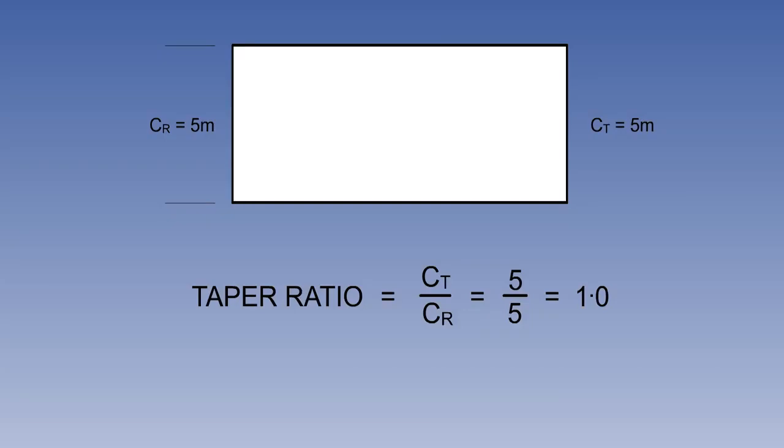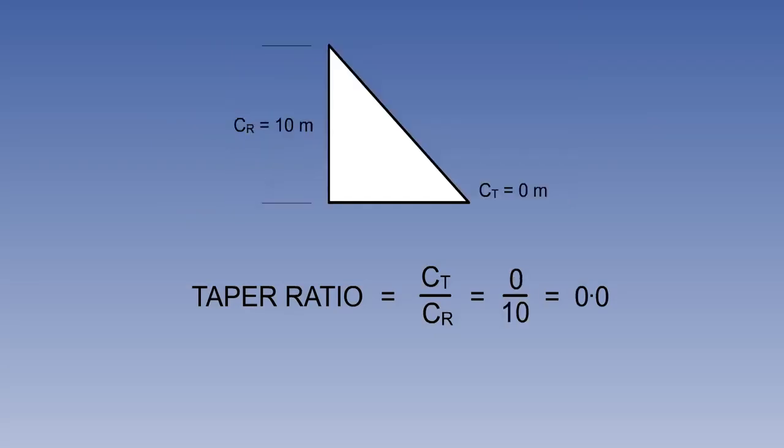The taper ratio affects the lift distribution and the structural weight of the wing. Ratios range from 1 for a rectangular wing to 0 for a delta wing with a pointed tip.